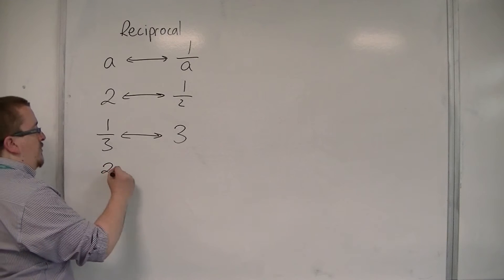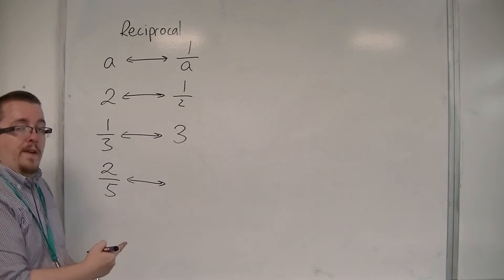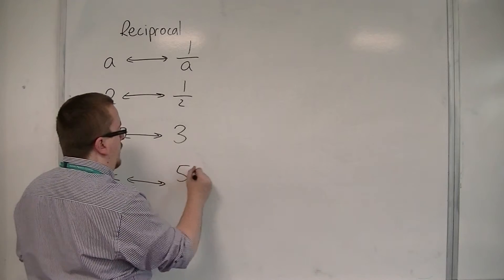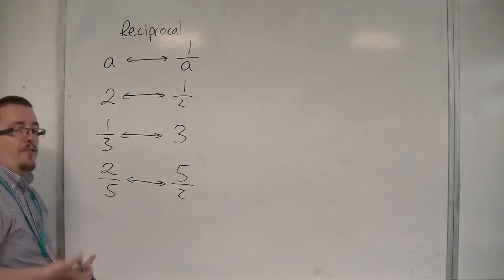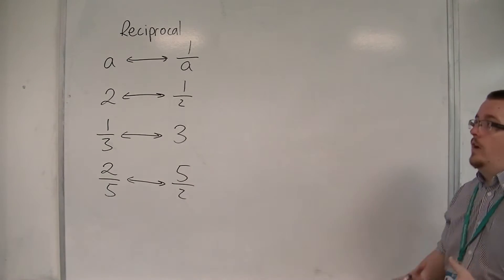If I look at the reciprocal of 2 fifths, then 1 over 2 fifths is 5 halves. So you can see that the fraction flips. And so that's how we can work out the reciprocal.